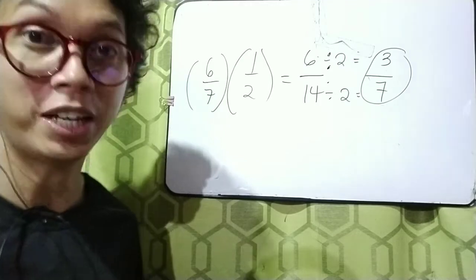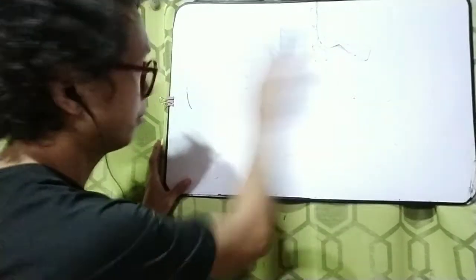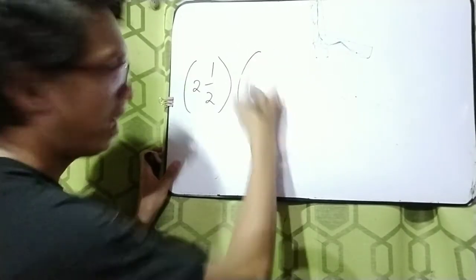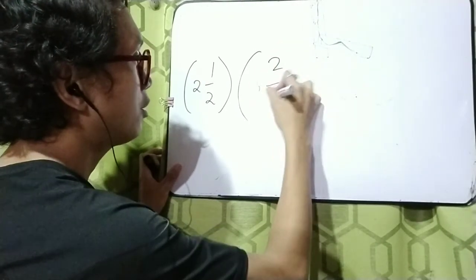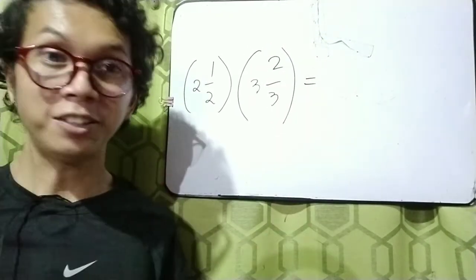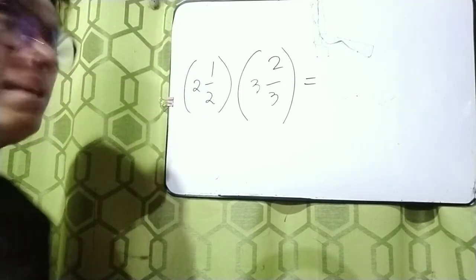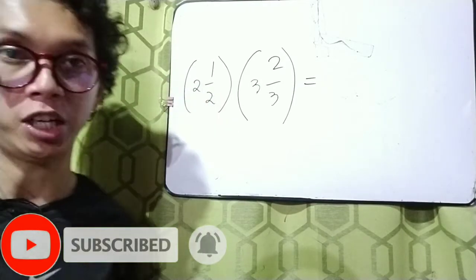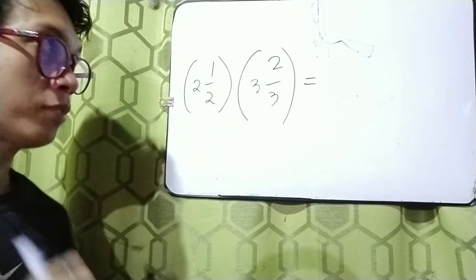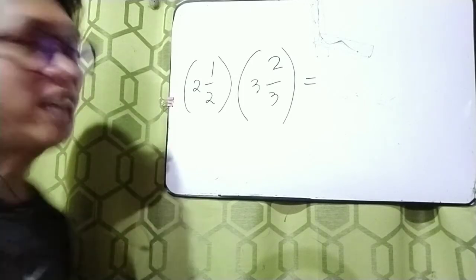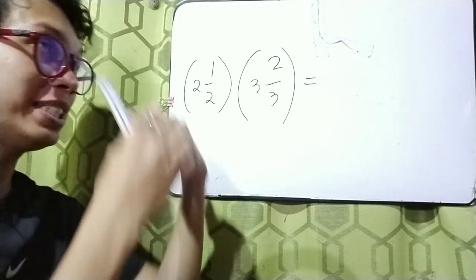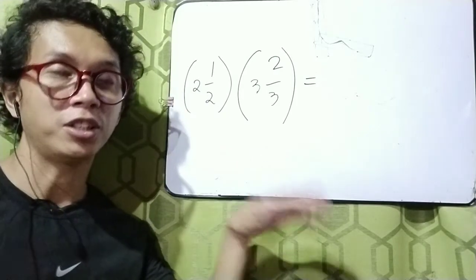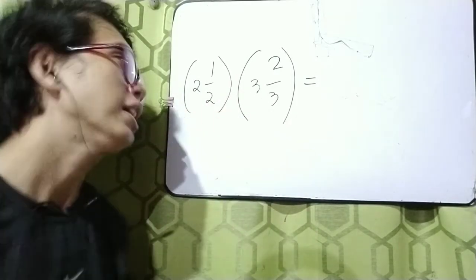Now let's have another example. We have 2 and a half times 3 and 2 thirds. As you can see, in this problem we are dealing with mixed numbers. A mixed number has a whole number and a fraction. Before we can multiply, we need to transform each mixed number into an improper fraction — one with only a numerator and denominator — because the rule states we multiply numerator to numerator and denominator to denominator.